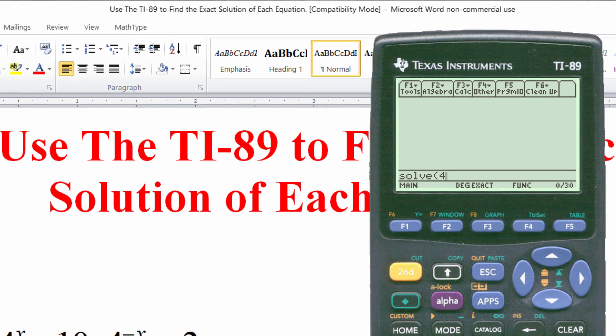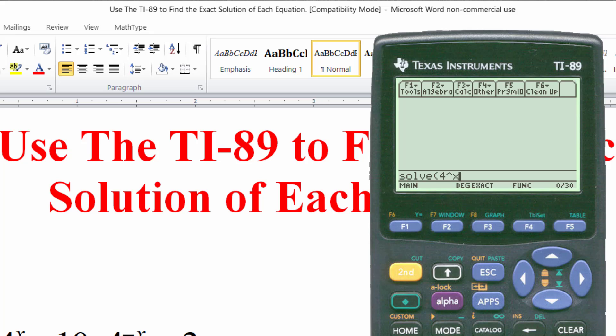So this will be 4 and exponent x and then minus 10 times 4 and the power here is, when in doubt always put parentheses, minus x equal to 3.